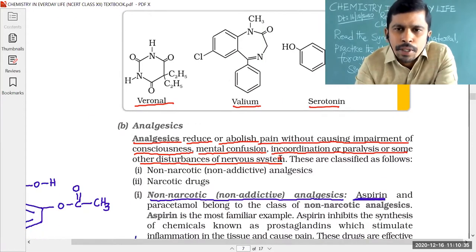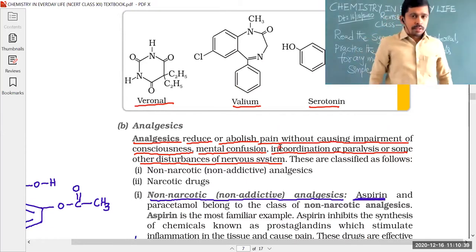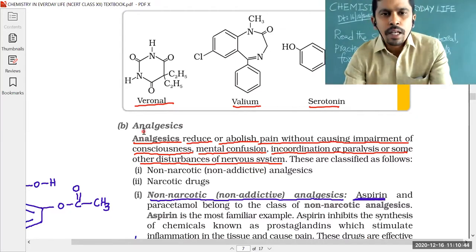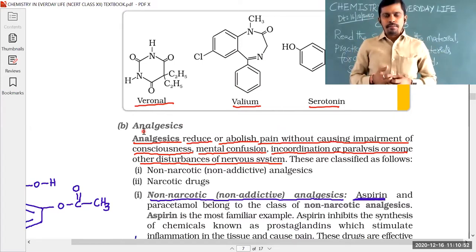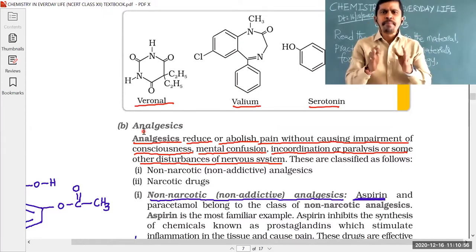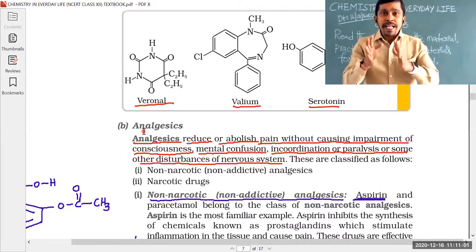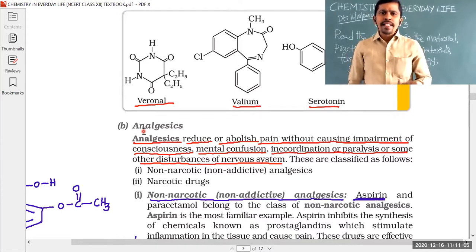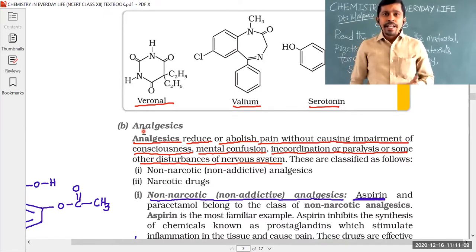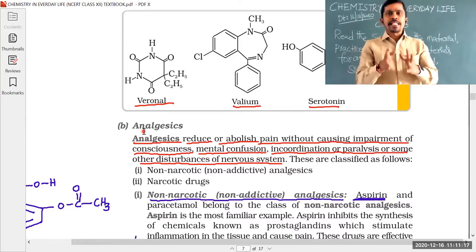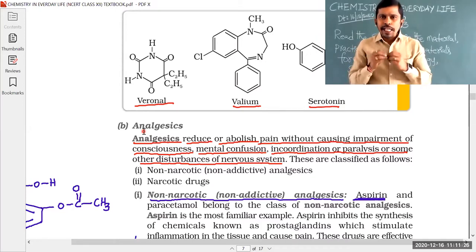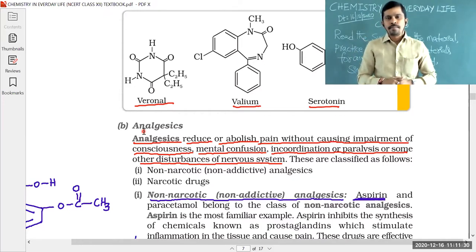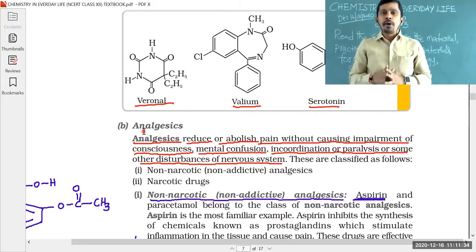The next topic is analgesics — this is the most important topic in this chapter. Analgesics: generally when we are having any body pain or headache, that is a mild pain. But when a person has cancer — lung cancer, kidney cancer, or blood cancer — that person suffers with severe pain. Pain is two types: mild pain and severe pain. The drug used to reduce the pain in our body is called an analgesic.